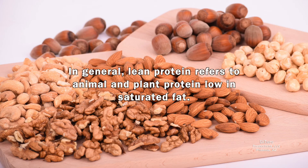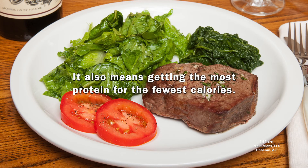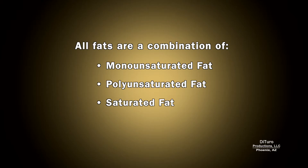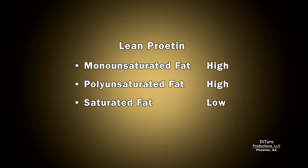In general, lean protein refers to animal and plant protein low in saturated fat. It also means getting the most protein for the fewest calories. All fats are a combination of mono, poly, and unsaturated fat. Lean protein is high in mono and polyunsaturated fat and low in saturated fat.